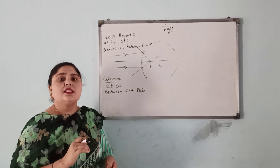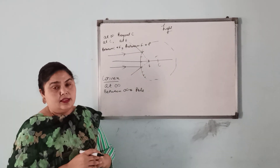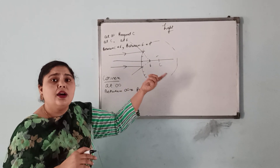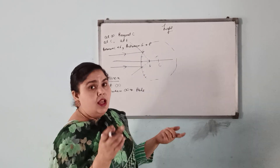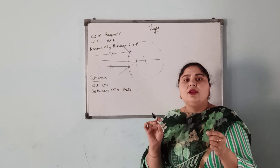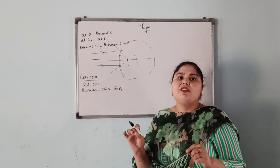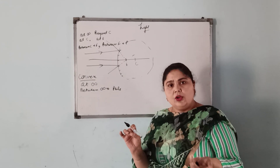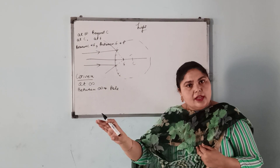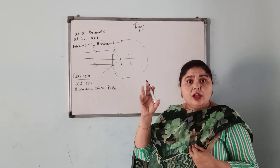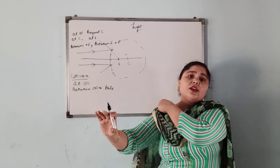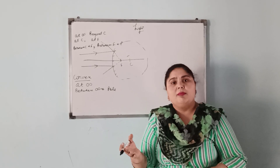The focus is that point on the principal axis where, after reflection, the rays appear to meet. The principal focus of a convex mirror is the point on the principal axis where, after reflection, the rays appear to meet. In this case, the rays only appear to meet. Whenever the image is actually formed, it is called a real image. But here the image is not actually formed — this image is called a virtual image.